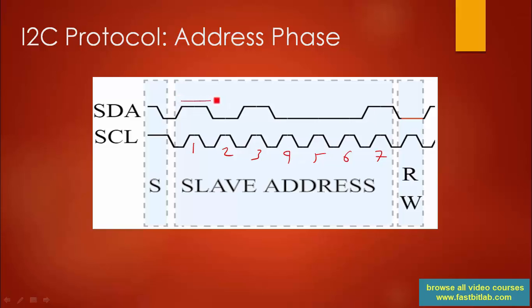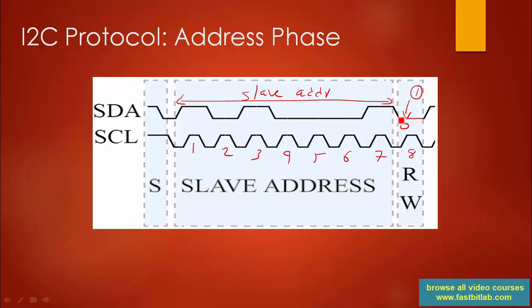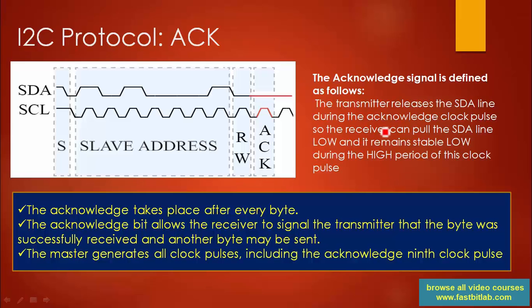The first through seventh clock cycles carry the address of the slave. At the eighth clock cycle, if SDA is zero it's a write operation, and if SDA is one it's a read operation. You should remember this. Now let's understand what is ACK and NACK — the ninth clock cycle is the place for the ACK or NACK.